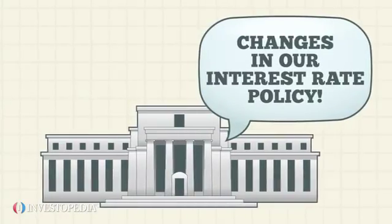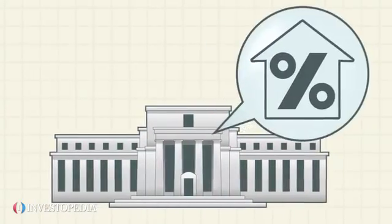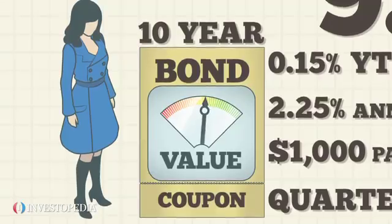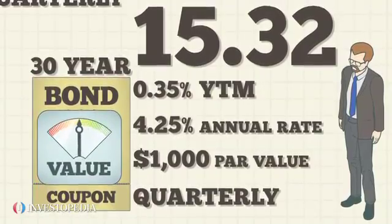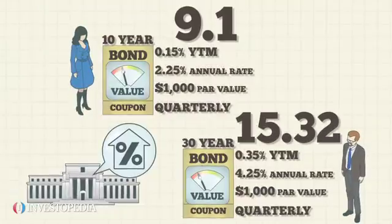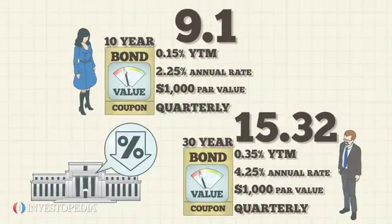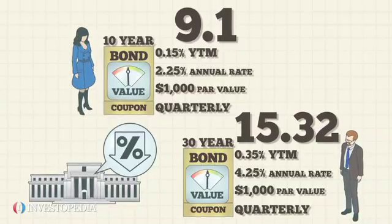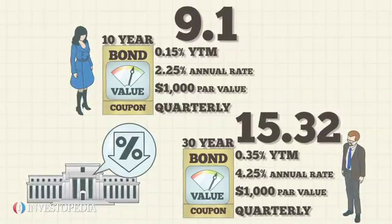Suppose the Federal Reserve announces changes in its interest rate policy and interest rates increase. Christine's bond will decrease in value, but Michael's bond will experience a bigger decrease because of its higher duration. Similarly, if interest rates were to decrease, Michael's bond would gain more value than Christine's, again because of its higher duration.